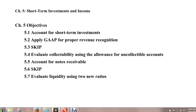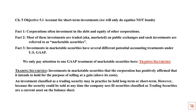We're on chapter 5. Just to remind you about the objectives, we're going to skip 5.3 and 5.6. The first thing we're going to cover is short-term investments, in particular trading securities. Corporations invest in debt and equity of other corporations. Most of these investments are traded on public exchanges and are often referred to as marketable securities. For accounting purposes, they can have several different accounting treatments under GAAP, but we're just going to look at what are referred to as trading securities.